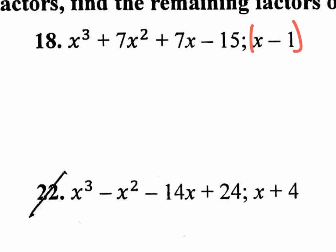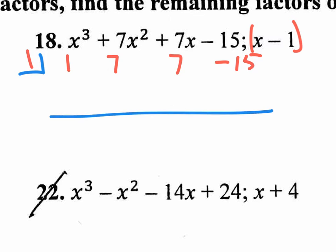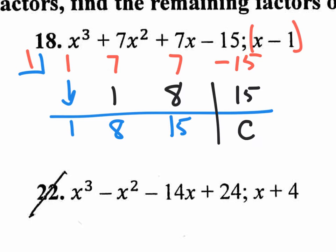Let's go through synthetic division to prove the remainder is zero and confirm that x minus one really is a factor. Put positive one in the box (opposite sign of what you see). Coefficients are one, seven, seven, negative fifteen. Bring down the one. One times one is one. Seven plus one is eight. One times eight is eight. Seven plus eight is fifteen. One times fifteen is fifteen. Fifteen plus negative fifteen is zero — the remainder is zero, confirming x minus one is a factor.